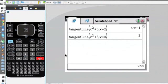This shows us that if you put the equation and you put comma and x equals a value that you want to find tangent line for, it gives you the correct equation of the line.